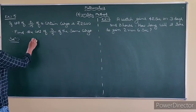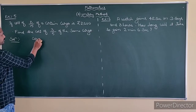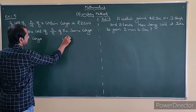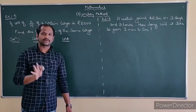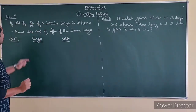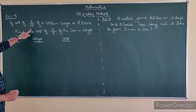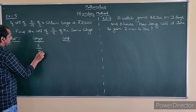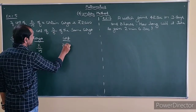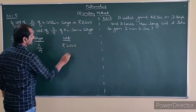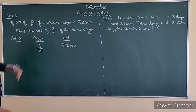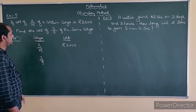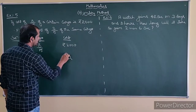So we have two variables here: one is cargo and the other one is cost. The cost of 8.50 of a certain cargo — so 8.50 of a total cargo is Rs. 2000. Find the cost of 3.50 of the same cargo. We don't know this first.